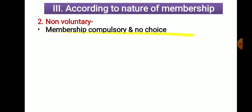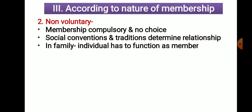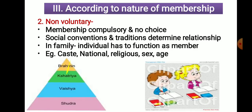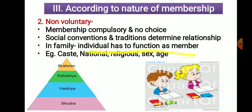The second type is non-voluntary groups. Membership is compulsory — there is no choice. Social convention and tradition determine the relationship. Because of traditions, conventions, and social norms, these groups are formed. For example, family — every member born into a family must act as a member of that family; it is natural. Another example is the caste system: as you are born into a particular caste, you must follow it. Nation and religion are also examples. These are permanent groups and non-voluntary — you cannot change them. They are formed because of traditions and natural relations.